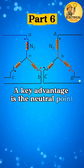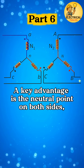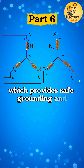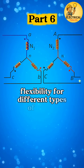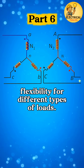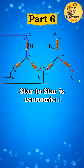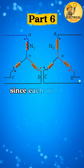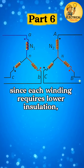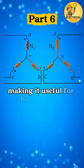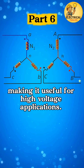A key advantage is the neutral point on both sides, which provides safe grounding and flexibility for different types of loads. Star-to-star is economical since each winding requires lower insulation, making it useful for high-voltage applications.